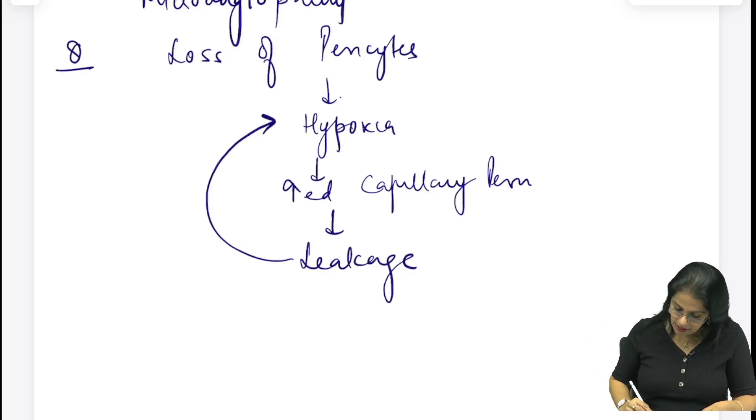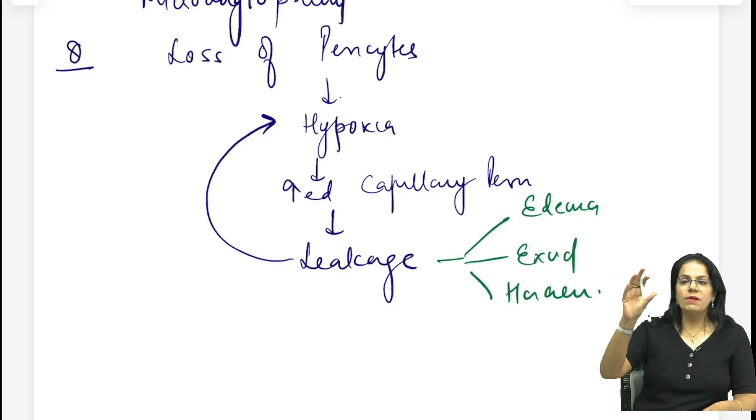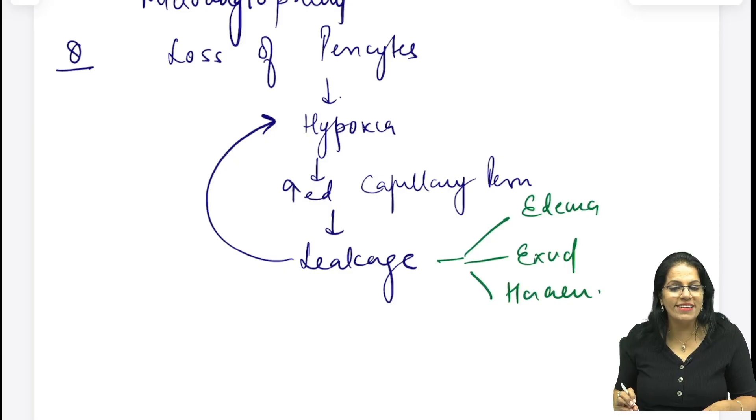Leakage kaise manifest karta hai? Edemas milenge, exudates milenge, aur hemorrhage milenge. Edema, all type of edema - macular edema, disc edema, papilledema, retinal edema. Exudates mainly leakage ho raha hai isliye hard exudates. Hard exudates kya hota hai? Leaked lipids. Aur soft exudates kya hota hai? Axonal debris, that is dead axons. Hemorrhage, hemorrhage dono tarah ke aapne padhe honge - superficial hemorrhage aur deep hemorrhage. Superficial ko hum bulate hai flame shaped hemorrhage aur deep ko dot and blot hemorrhage, right?